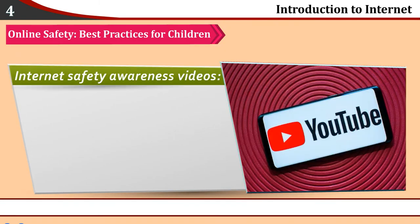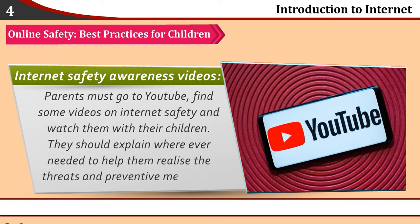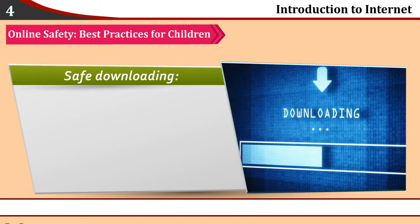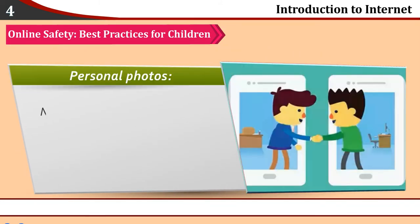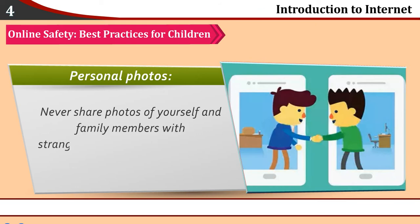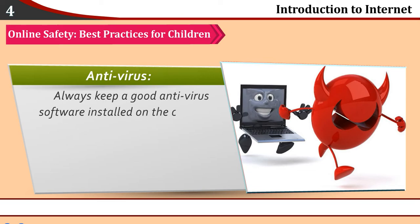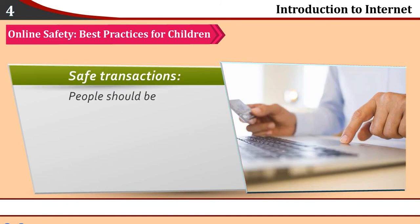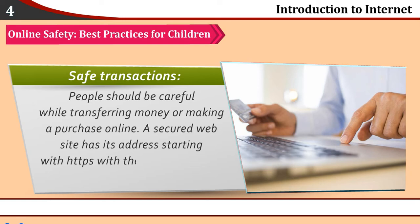Internet Safety Awareness Videos: Parents must go to YouTube, find some videos on internet safety and watch them with their children. They should explain wherever needed to help children realize the threats and preventive measures. Be Discreet: Never share your personal information with everyone. Safe Downloading: Talk to your parents and teachers before downloading any software or game — do not experiment. Personal Photos: Never share photos of yourself and family members with strangers or even friends whom you cannot trust. Antivirus: Always keep a good antivirus software installed on the computer and ask your parents to run antivirus regularly. Safe Transactions: People should be careful while transferring money or making a purchase online. A secured website has its address starting with HTTPS with the icon of a closed padlock.